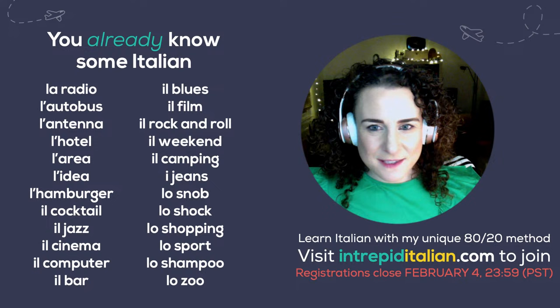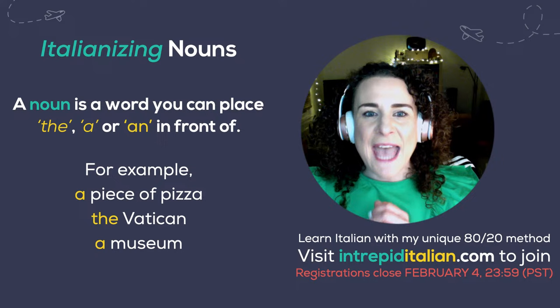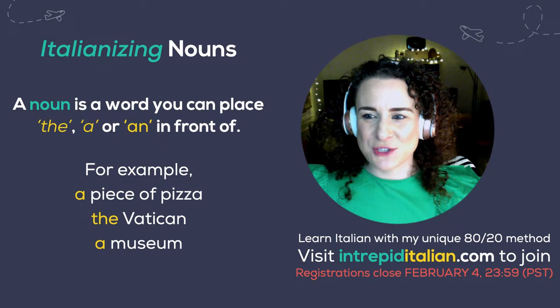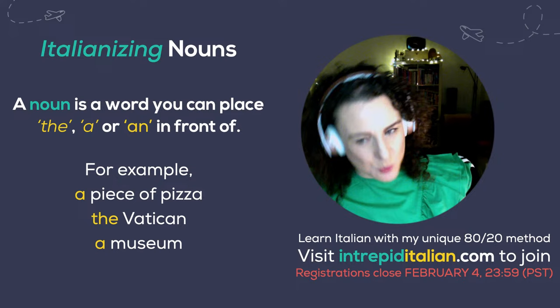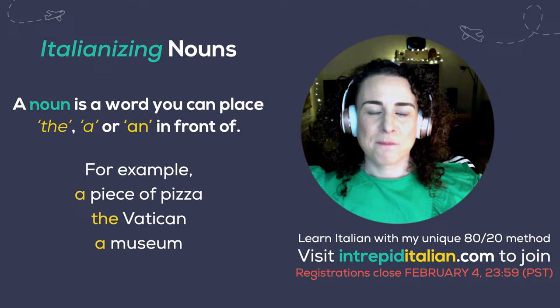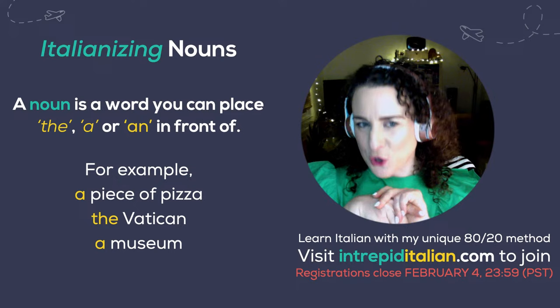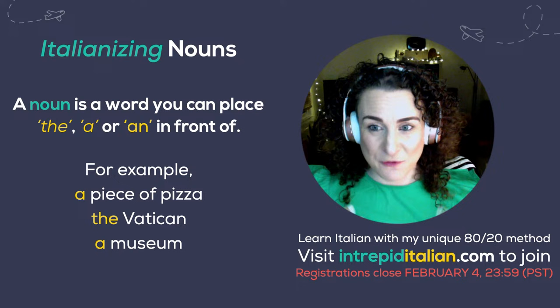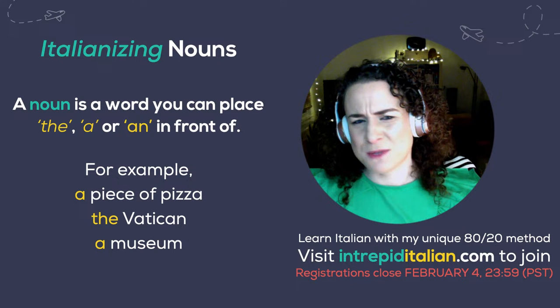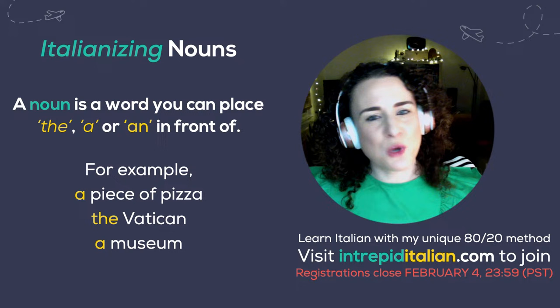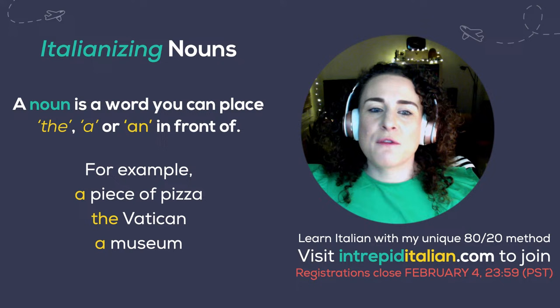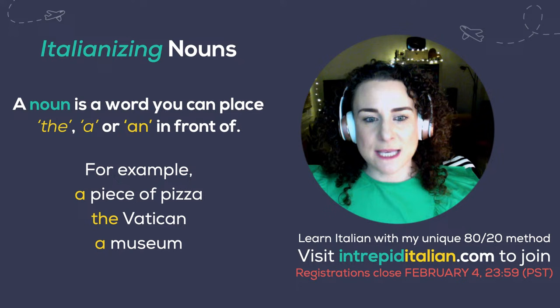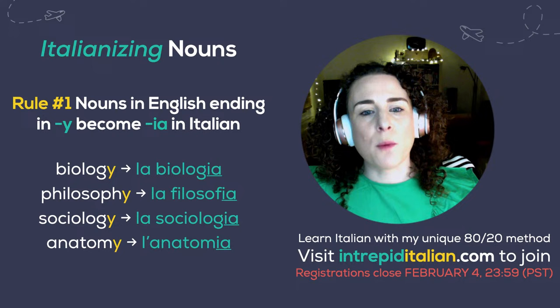So now we're going to look at 'Italianising' — I know it's a word I made up, but I think it's the best way to describe it — Italianising nouns. How do we convert an English word into an Italian word? Just as a recap: I don't assume you know anything when it comes to grammar because when I learned Italian I didn't know what a verb was and felt really intimidated. A noun is a word you can place 'the,' 'a,' or 'an' in front of — like a piece of pizza, the Vatican, a museum. So let's look at how we can change them from English into Italian.